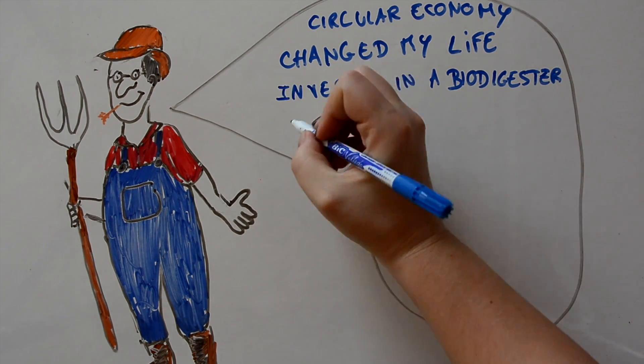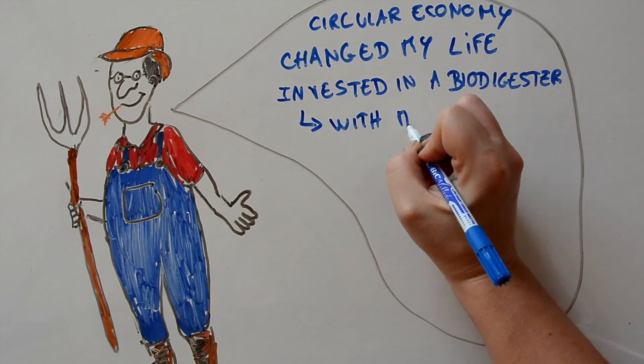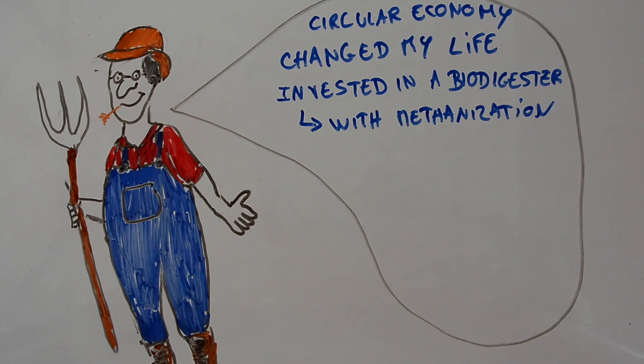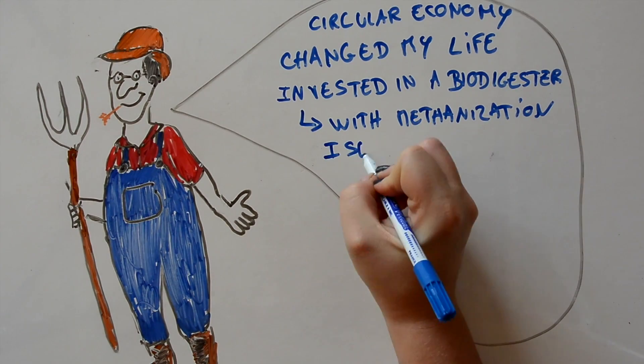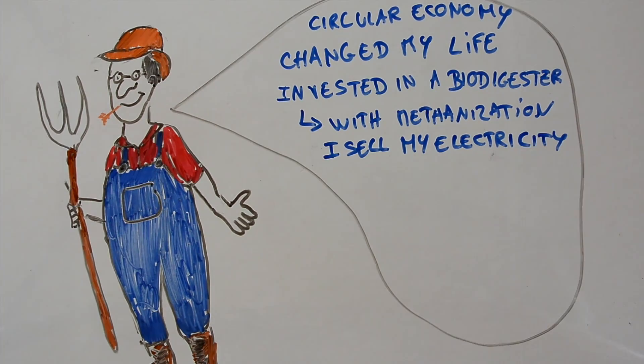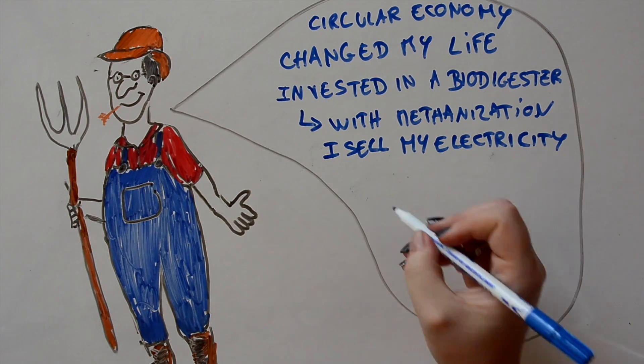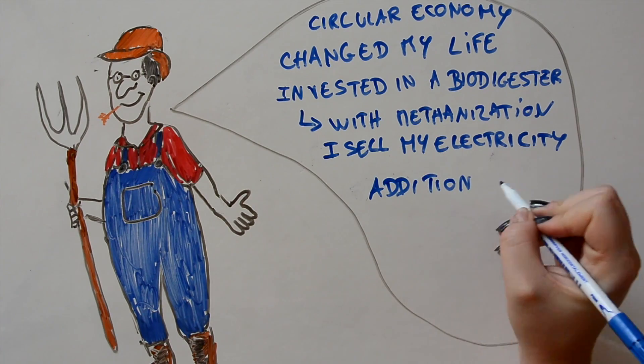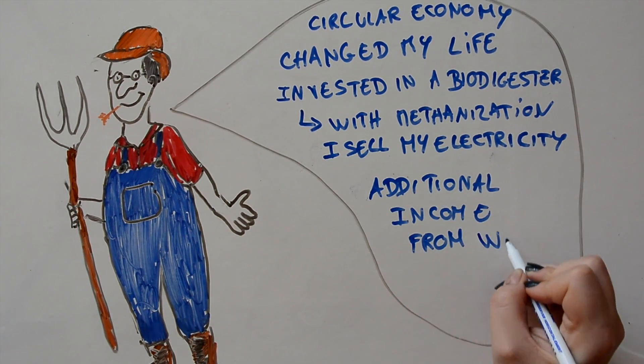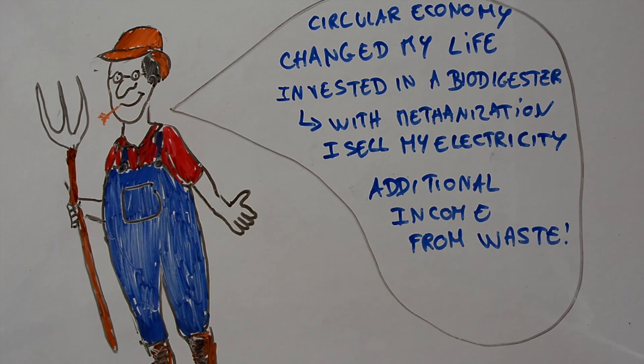With methanization, which is the recuperation of the natural gas from fermentation, I produce 2 million kilowatts of electricity each year. I use part of this electricity to heat my property and the rest, I sell it to the state. I managed to create for myself an additional income from something I had been throwing away all these years.